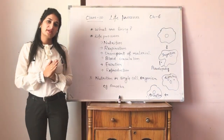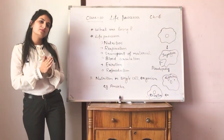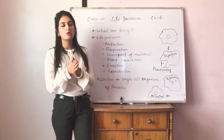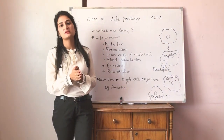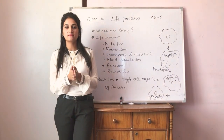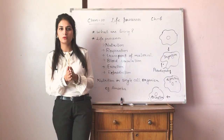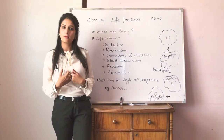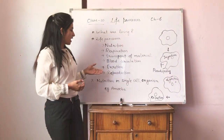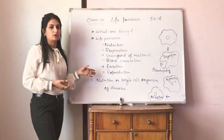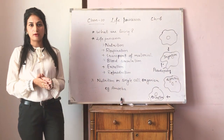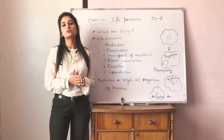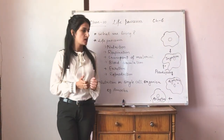Next is excretion. Excretion is the removal of waste material from the body. It is very necessary to remove waste material because it can be toxic for your body. After that, reproduction — reproduction is essential for life because without reproduction, you cannot continue your species.